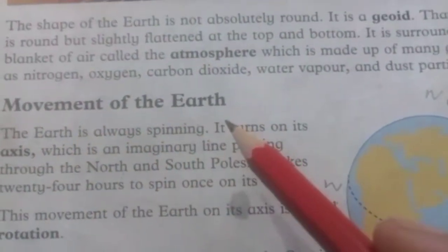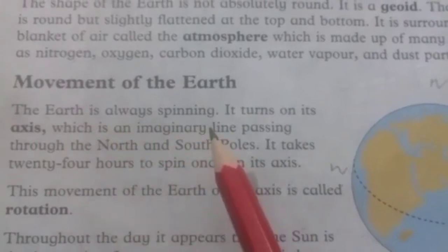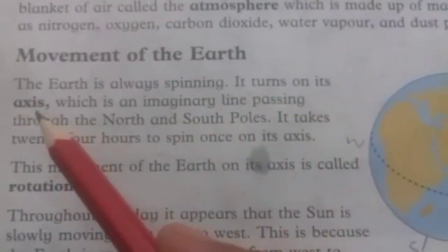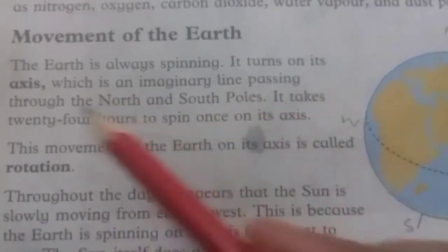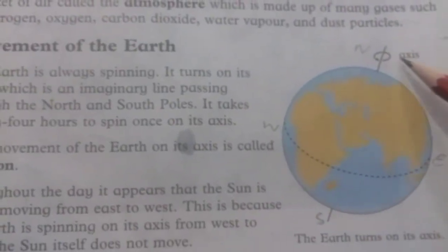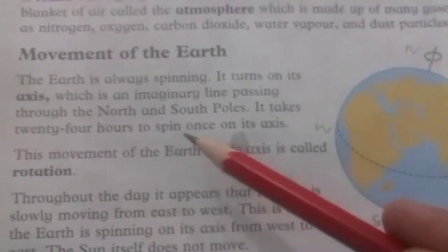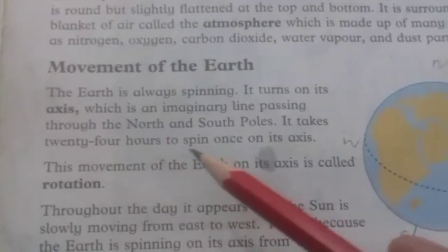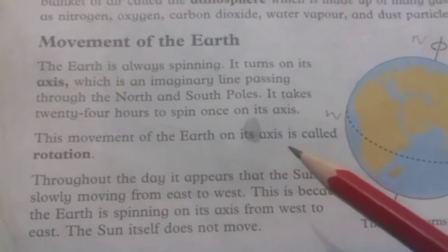Movement of the earth. The earth is always spinning. It turns on its axis, which is an imaginary line passing through the north and south pole. You can see in this picture — axis north to south pole.